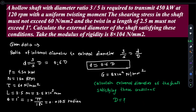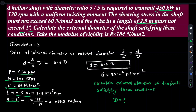The diameter ratio of internal to external diameter is 3 upon 5, so d/D = 3/5, meaning d = 0.6D. The shaft must transmit 450 kilowatt at 120 rpm with uniform twisting moment. The shear stress must not exceed 60 N/mm², the twisting length is 2.5 meters (2500 mm), and the angle of twist θ = 1 degree converted to radians. Find the external diameter satisfying these conditions.